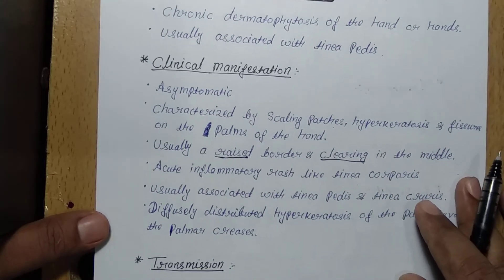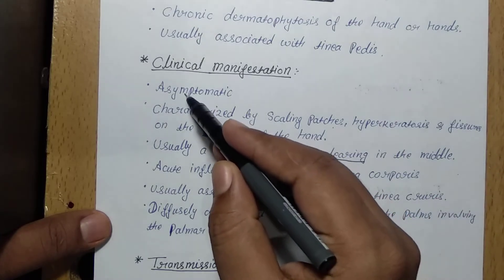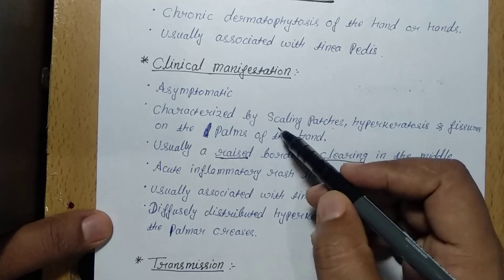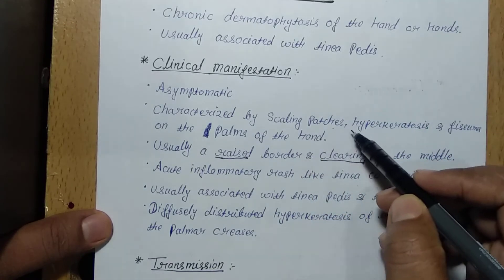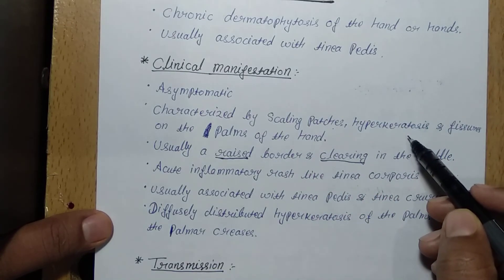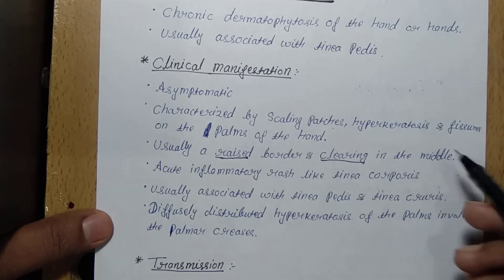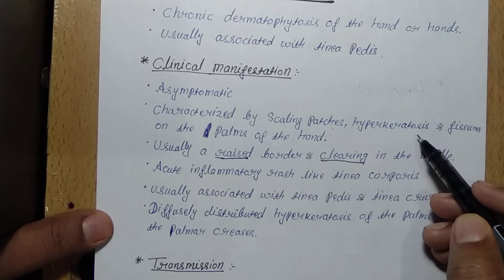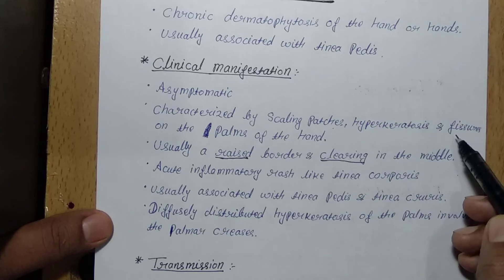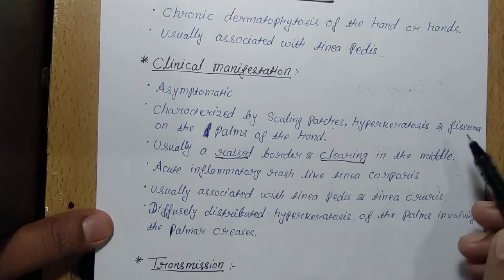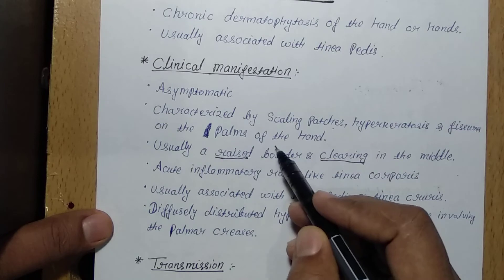What are the clinical manifestations of tinea manuum? Tinea manuum is an asymptomatic fungal infection characterized by scaling patches and hyperkeratosis — hyperkeratosis means abnormal keratin is present, or thickening of the outer layer of the skin. Fissures are also present on the palms of the hand.